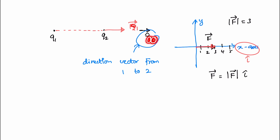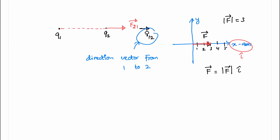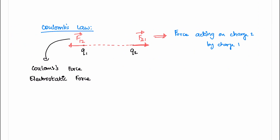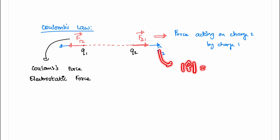The subscript 1,2 means from charge 1 to charge 2. There is also R-cap 2,1 — from charge 2 to charge 1. Looking at the diagram, R12 is a vector and R21 is a vector in the opposite direction. The length of a unit direction vector is 1, so the magnitude of R-cap 1,2 is equal to 1, and similarly the magnitude of R-cap 2,1 is equal to 1.